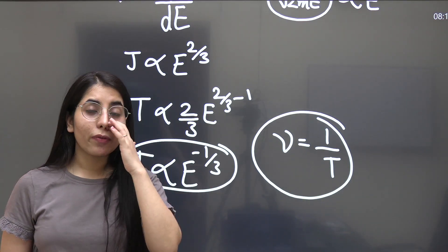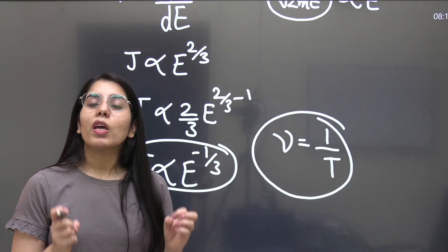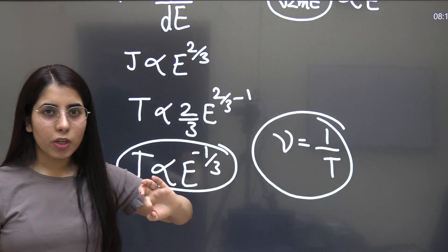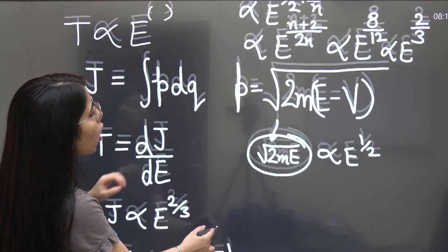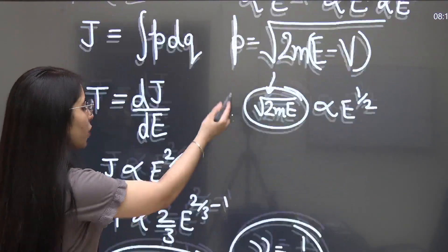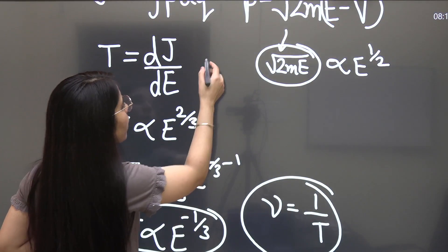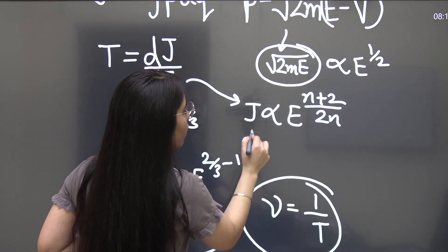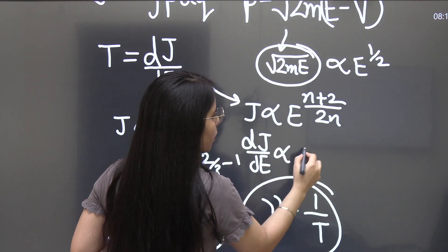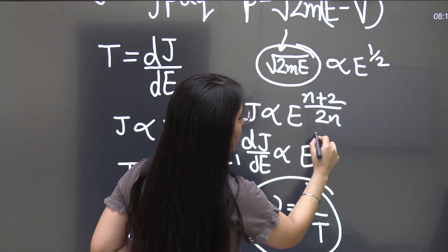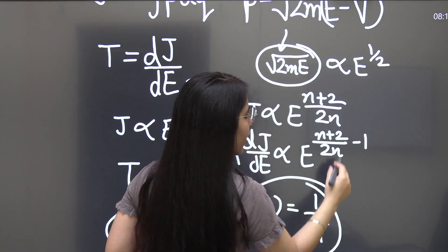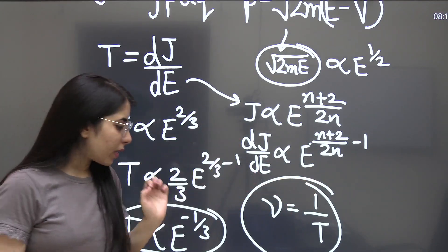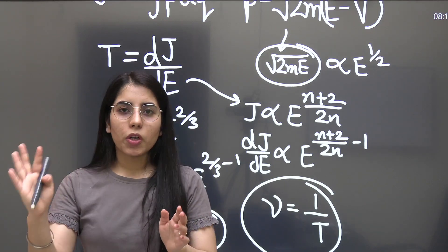Maybe in the discussion part we have devoted some time, but after that, if you will be applying this method and these steps, it will surely be very much less time-taking for you. The final expressions you can also prepare: I have got the general dependency of J on E as E to the power n plus 2 upon 2n. So J is proportional to E to the power n plus 2 upon 2n. Differentiating with respect to E gives the power term n plus 2 upon 2n minus 1, which simplifies to 2 minus n upon 2n. So T is proportional to E to the power 2 minus n upon 2n.